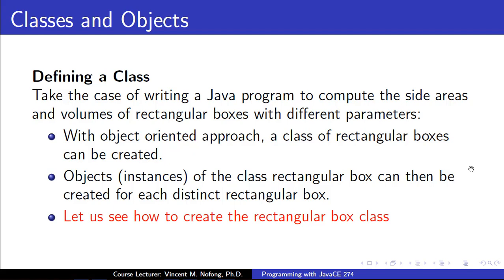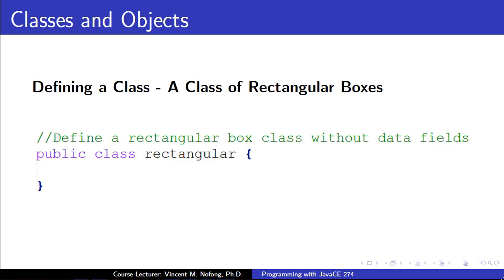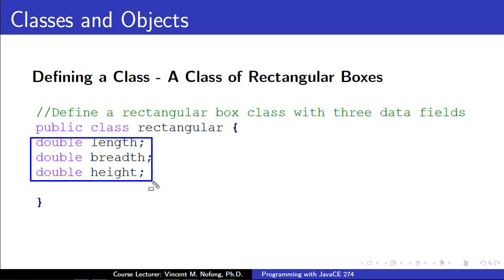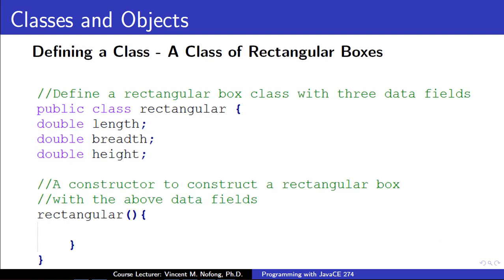We'll go through some code to see how it goes. To create a rectangular box class, we simply create a new Java class file and give it the name 'Rectangular.' This will create a class file for us. If we want to give it data fields, we use variables to determine the type of data fields our rectangular box class will have - the length, breadth, and height stored as doubles. Because we haven't initialized them, they will all have default values of 0. However, this alone will not enable us to create rectangular boxes; we need to include a constructor.